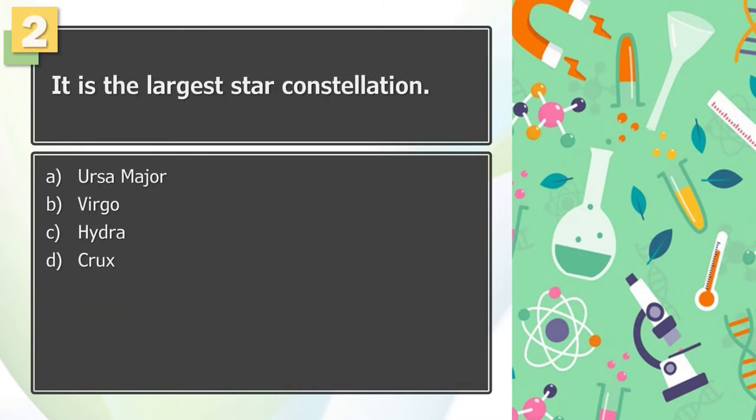Number 2: It is the largest star constellation. A. Ursa Major, B. Virgo, C. Hydra, D. Crux.